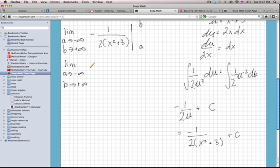The fundamental rule of calculus says that this becomes negative 1 over 2. I'm going to evaluate this at b. This will be b squared plus 3 minus negative or plus 1 over 2 times a squared plus 3.